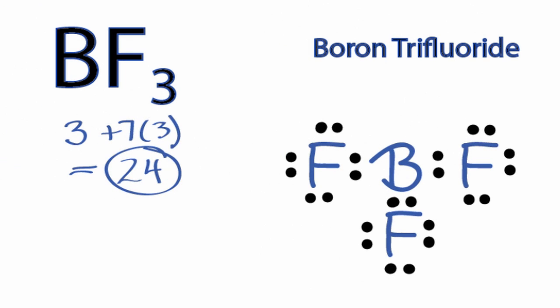Turns out that boron's a bit of an exception. It can be okay with only six valence electrons. If you were to check the formal charges for boron and then for the fluorines, you'd find out that all the formal charges are zero for the BF3 Lewis structure. So that tells us that this is the most likely or plausible Lewis structure for BF3.